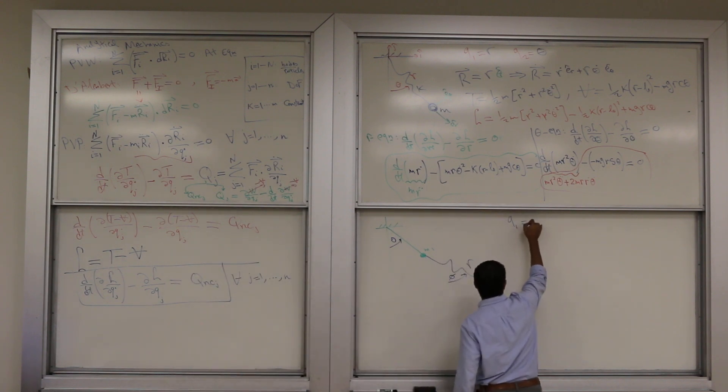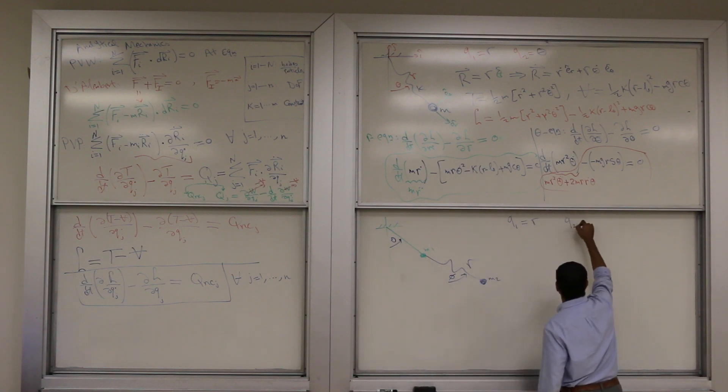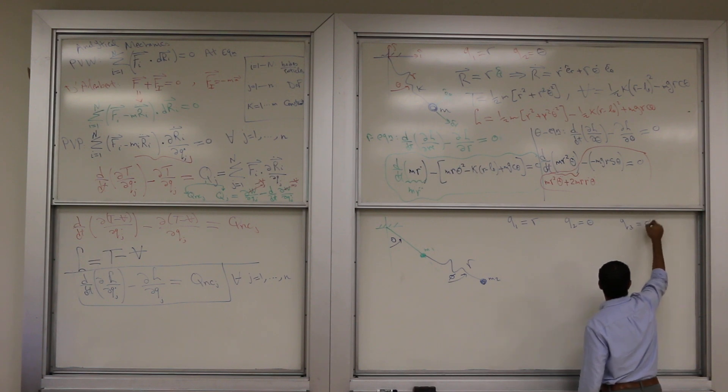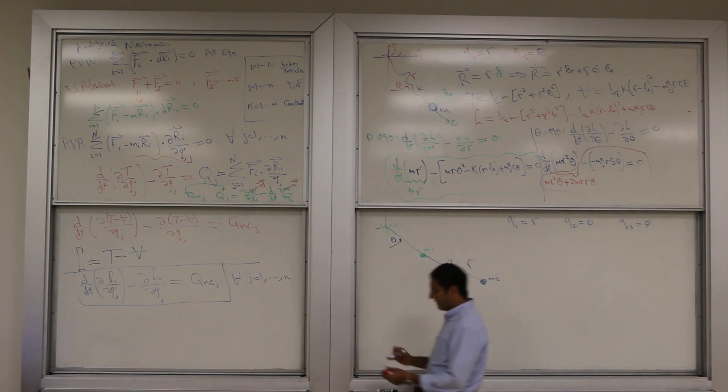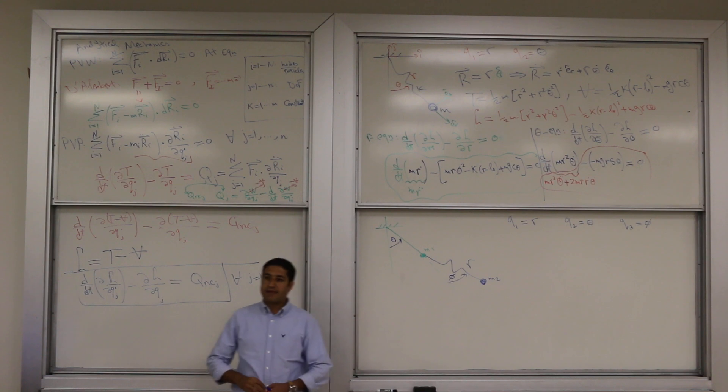You've got to select your Qs. I have two masses, so I'm going to write down two position vectors and differentiate. Hit the velocity, then I'm almost done.